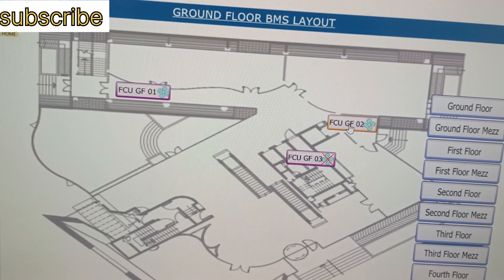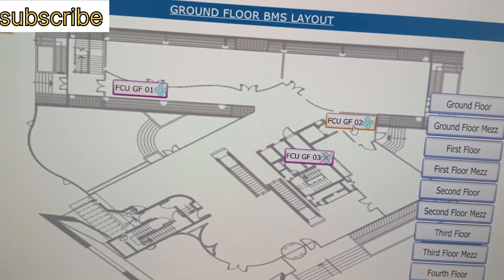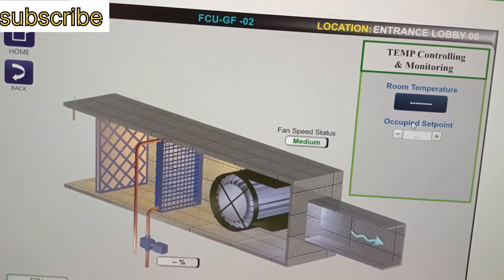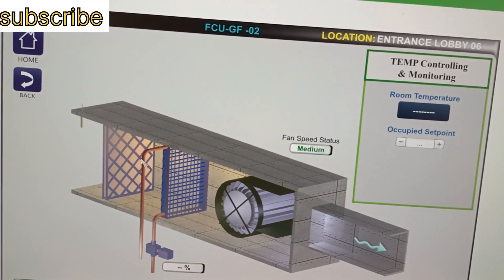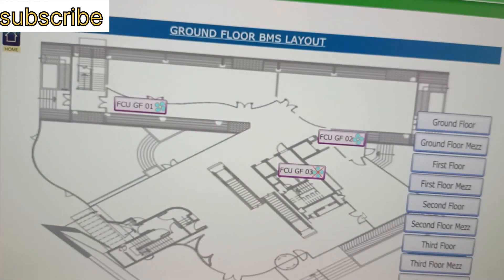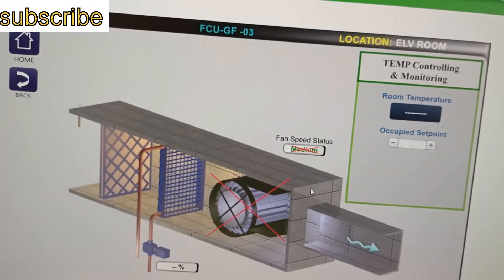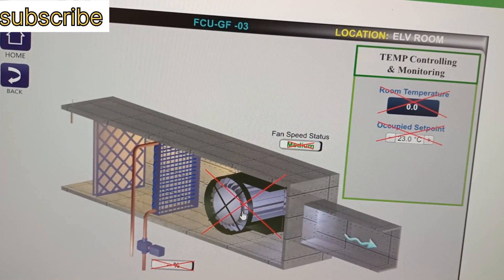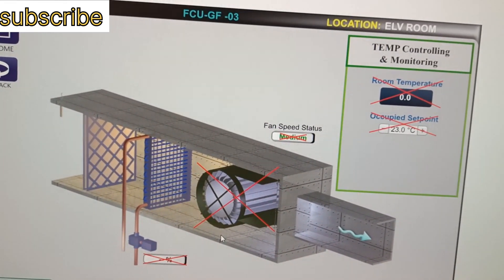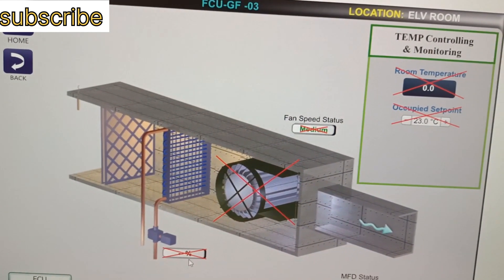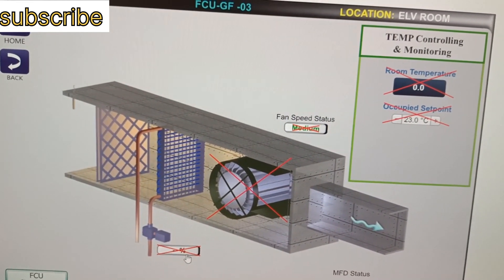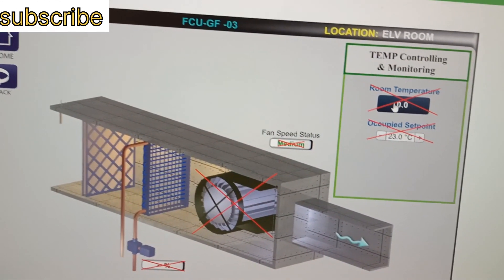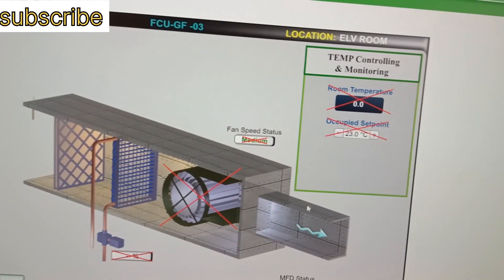FCU GF02 is in off position and there is no temperature shown. We need to check this one. In this parameter we are not getting any running status, and even the coil temperature, the percentage, the room temperature, and the set point — we are not getting any of these readings.